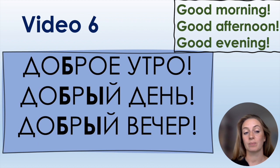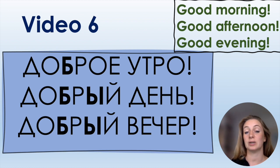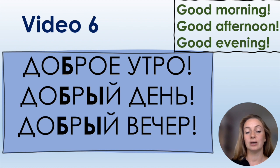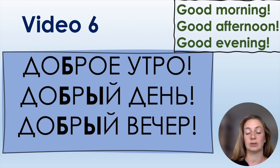You can see on the slide the key sentences for this video in bold. They are: ДОБРОЕ УТРО, ДОБРЫЙ ДЕНЬ, ДОБРЫЙ ВЕЧЕР. It means Good morning — ДОБРОЕ УТРО. We had the word УТРО in previous videos. ДОБРЫЙ ДЕНЬ — you already know the word for day. ДОБРЫЙ ВЕЧЕР means Good evening. So: ДОБРОЕ УТРО, ДОБРЫЙ ДЕНЬ, ДОБРЫЙ ВЕЧЕР. Now repeat after me and read other words with letters Б and Ю.